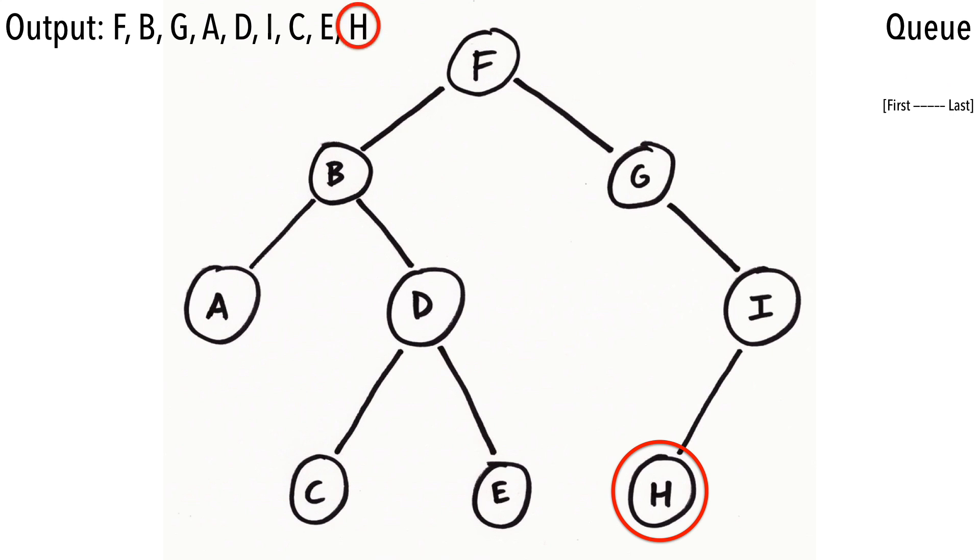At last our queue is empty, so we've concluded the loop and the algorithm. I hope you can see why they call it level order tree traversal.